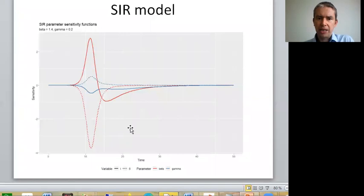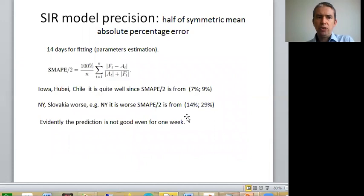We can see that again the sensitivity of the parameters is very different. This is fit for beta equals 1.4 and gamma equals 0.2. We can see that beta is a very sensitive parameter here. Gamma in comparison—gamma is the blue curve, the red curve for beta—is much more sensitive.